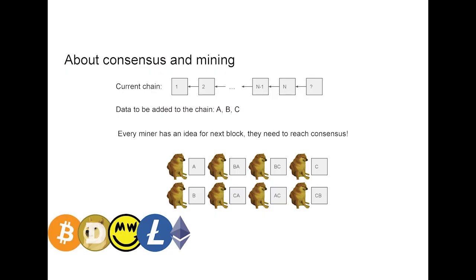And the way we add a new block is the matter of consensus because since there is no central authority, everyone has to agree on what the next block is. So we can imagine that we have some current chain, we have some data to put in this chain, in this case, it's ABC. Those could be, for example, transactions. And there are network participants who are in charge of creating new blocks, we call them miners. And as you can see in this network of miners, each one of them has a different idea for what the next block could be.